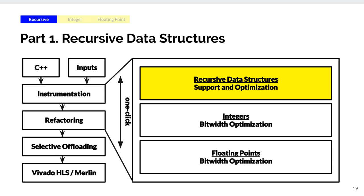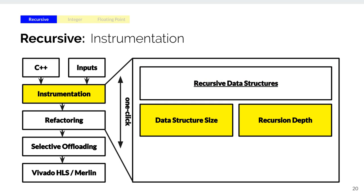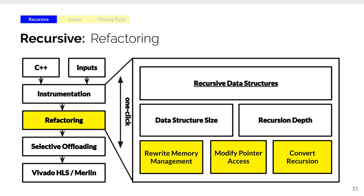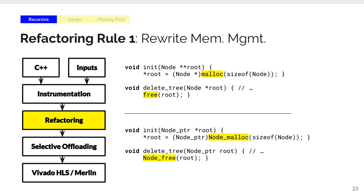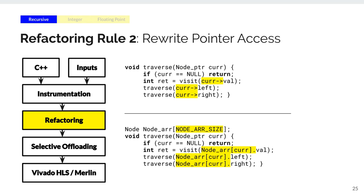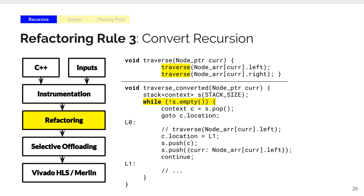Our first task is to make originally unsynthesizable recursive data structures synthesizable on FPGA. In the instrumentation step, we collect the data structure size and recursion depth using a set of typical data. Based on the collected invariants, we use the ROSE compiler framework to perform code refactoring using three rules. For a recursive binary tree: we pre-allocate an array with the monitored size, replace malloc and free with custom node_malloc and node_free that return array indices, replace pointer types with array offsets, propagate type changes throughout the program, replace pointer accesses with array accesses using offsets, and finally transform recursions into iterations using a stack.